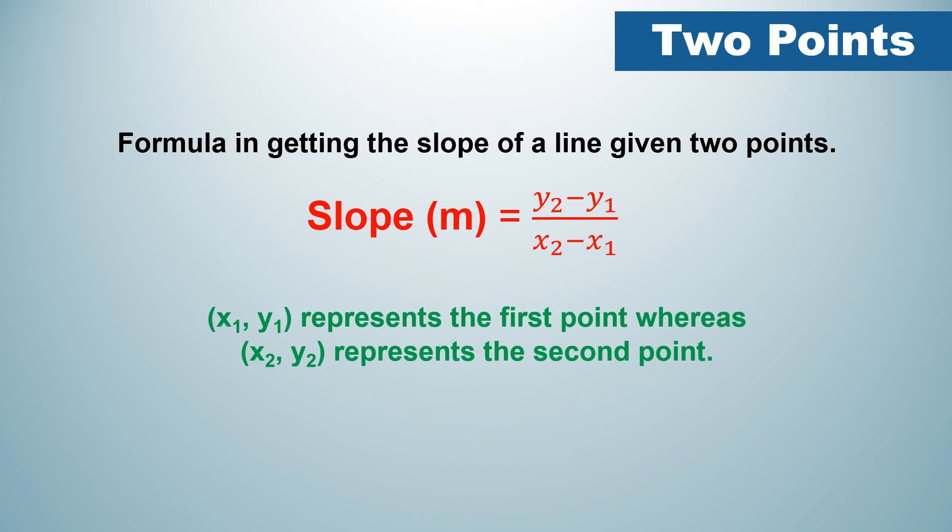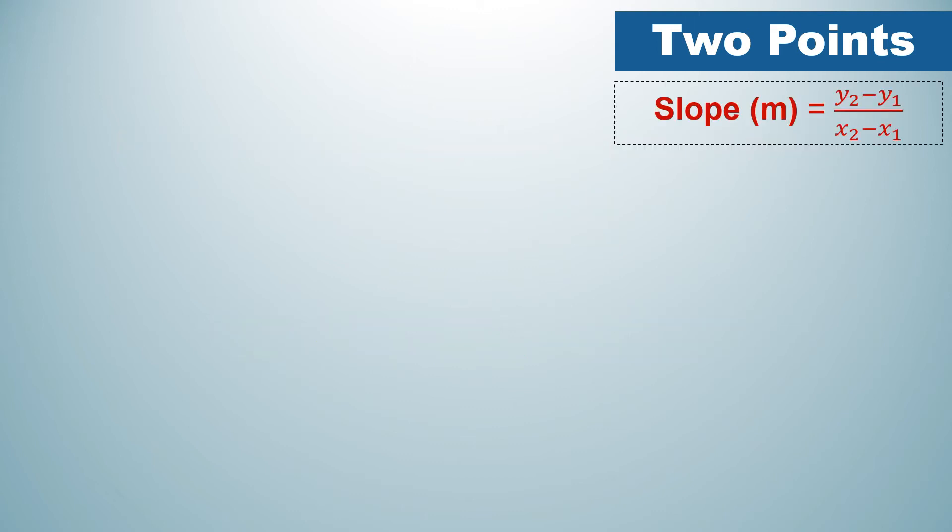The formula for getting the slope of a line given two points is: M equals y-sub-2 minus y-sub-1 over x-sub-2 minus x-sub-1, where x-sub-1 and y-sub-1 represent the first point, and x-sub-2 and y-sub-2 represent the second point.